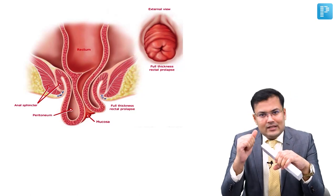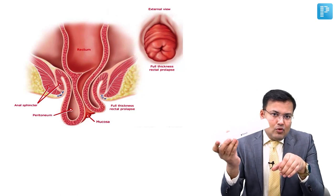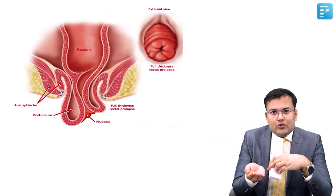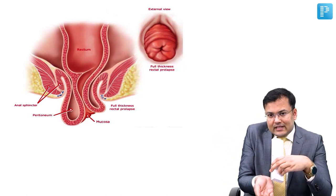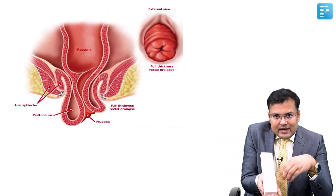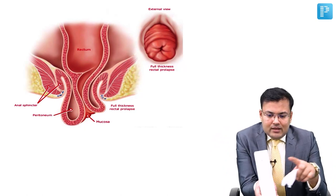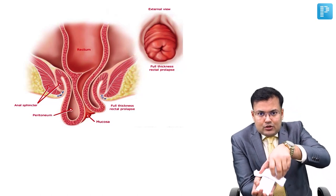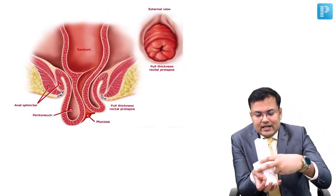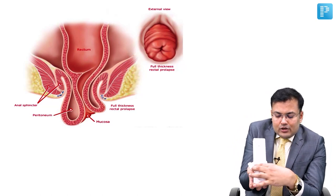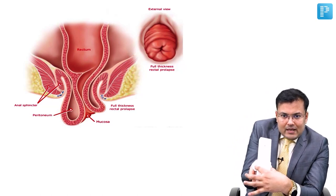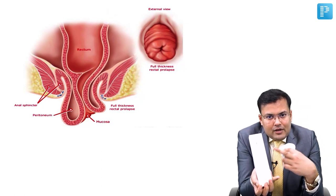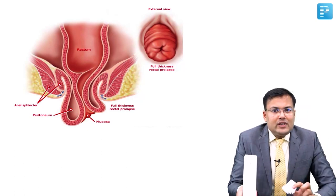How we can manage? Since this rectum is mobile and redundant, you can fix it. Posteriorly there is sacrum, and anteriorly there is rectum. Using mesh, this mesh is sutured around the rectum and fixed to the sacrum. So, fixation of rectum with the help of mesh to the sacrum is known as rectopexy.